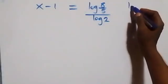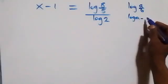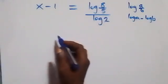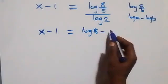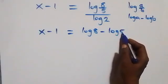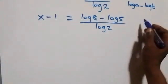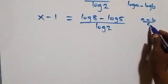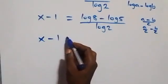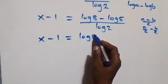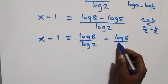Following the law of logarithms, log a over log b can be written as log a minus log b. So what we have here becomes x minus one equals log eight minus log five, over log two. We can also separate this fraction: since a minus b over c equals a over c minus b over c, this becomes x minus one equals log eight over log two, minus log five over log two.